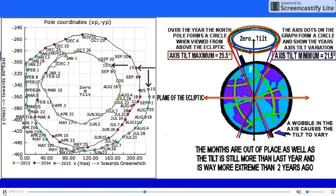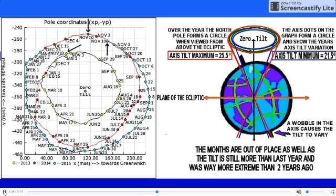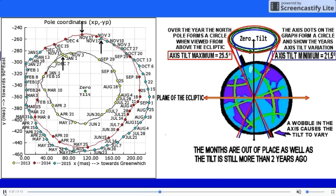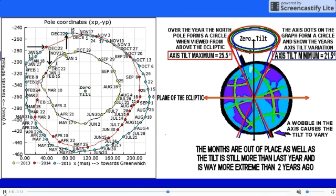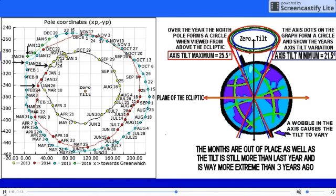On a minimum level, we are at a 21.5 degree tilt. On a maximum level, we are at 25.5 degrees. If you've been wondering about the extreme weather that has occurred over the past several years, this is definitely a possibility.